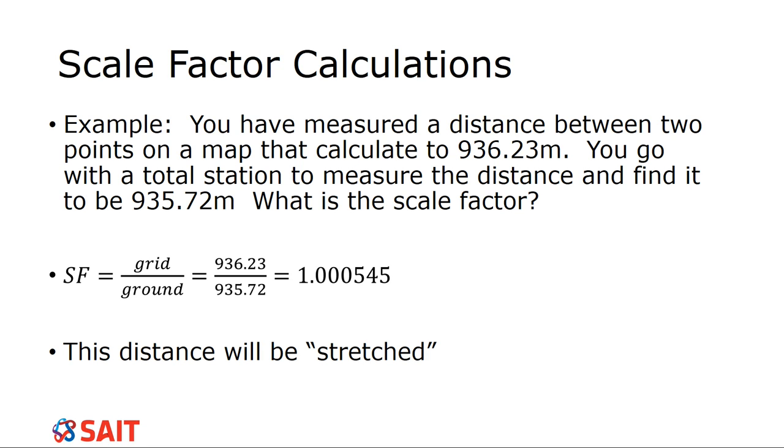Here's an example. You have a measured distance between two points on a map that calculate to be 936.23 meters. You go with a total station to measure the distance and find it to be 935.72 meters. So it's out by a little bit. What is the scale factor? Using this, we calculate it. We put the grid value, which is the map, divided by the ground value, which is your observed value, and we get 1.000545. So in this case, the distance is going to be stretched on the map. If you're finding that you have a regular error between your observed measurements and your actual calculated measurements, it's because of the scale factor. You're going to find that especially in mountainous areas, it makes it really interesting. Always keep in mind these scale factors.